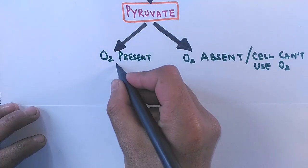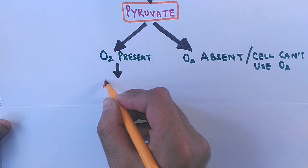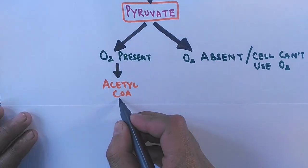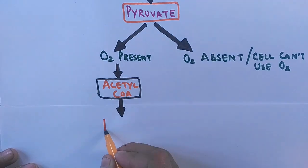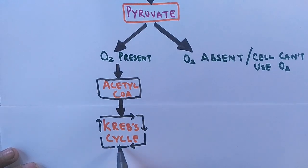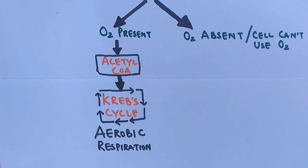If a cell has oxygen present and can make use of it, the pyruvate will be converted to acetyl coenzyme A, then it will enter the mitochondria and go through the cyclic Krebs cycle, and finally enter the electron transport chain. This whole process from glycolysis through the Krebs cycle through the electron transport chain is called aerobic respiration, because oxygen is present and is the final electron acceptor.